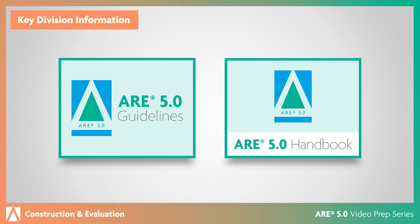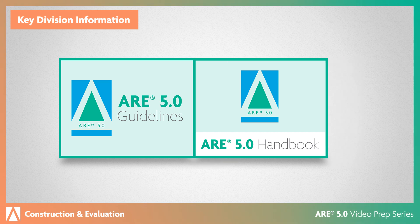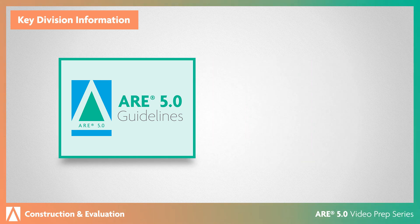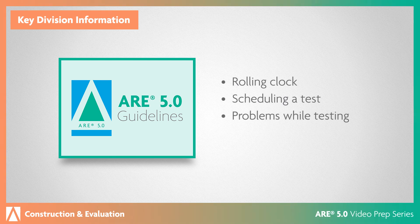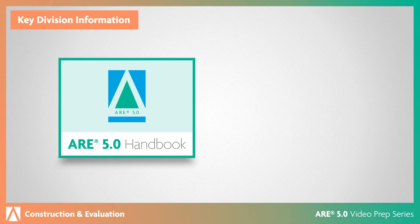Be sure to review the latest ARE 5.0 guidelines and ARE 5.0 handbook, both on the NCARB website. The guidelines contain critical information about ARE 5.0 policies, including the rolling clock, scheduling a test, problems while testing, and receiving your score.